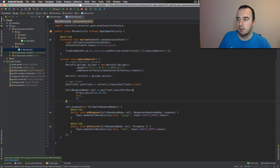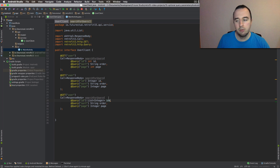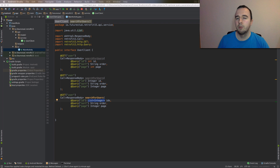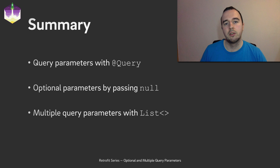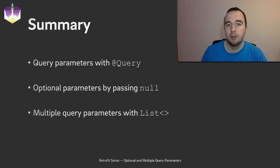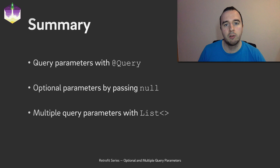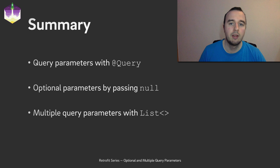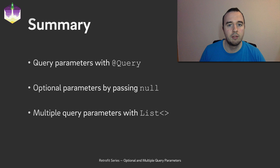So it doesn't matter if you declare multiple IDs in separate rows or if you use a list declaration — feel free to use whatever fits best to your scenario. That's already everything for this video. Let's review what you have learned. You've seen how to use query parameters with the query annotation, how to make parameters optional by passing null so Retrofit ignores those values, and two ways to send multiple query parameters with the same name. Thank you for watching. If you've learned something, please leave a like and if you want to see more videos in this series, subscribe. Enjoy and make it rock!